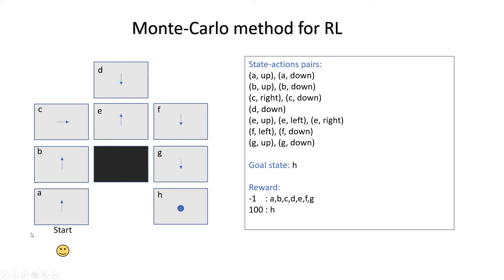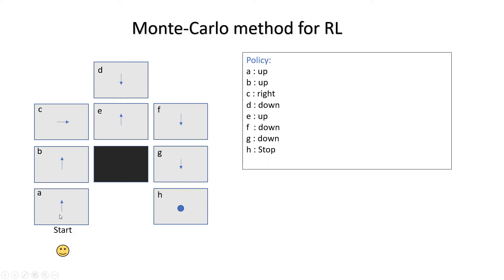The rewards for all states A, B, C, D, E, F, and G are negative one. If we are in state H, we get positive 100. We set an arbitrary policy: state A go up, state B go up, C go right, E go up, D go down, F go down, G go down, and if you're in state H you're done — you're at the goal. This initial policy is not optimal because if you start from A, you go to B, C, E, then from E you go up and D goes down creating a loop — you're forever stuck between those two states, never reaching H.